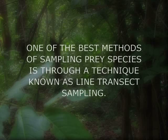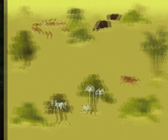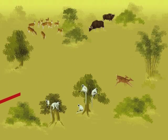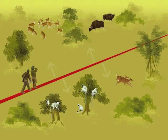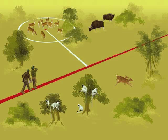One of the best methods of sampling prey species is through a technique known as line transect sampling. A line transect is a straight line through a forest on which observers walk to count animals on both sides of the line. The technique involves not only counting the numbers of animals seen but also measuring their perpendicular distance from the transect line.